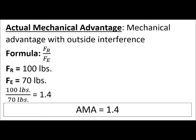To calculate the actual mechanical advantage, we take the force of the load applying resistance and divide it by the force of the effort. In this example, let's say the force of the resistance is 100 pounds and the force of the effort is 70 pounds. In this case, the actual mechanical advantage is 1.4.